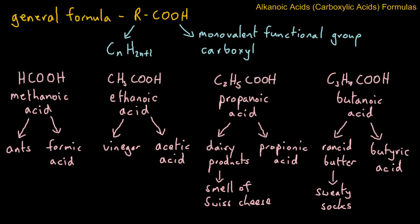So those are the four examples from this homologous group of alkanoic acids, going from methanoic through to butanoic acid.